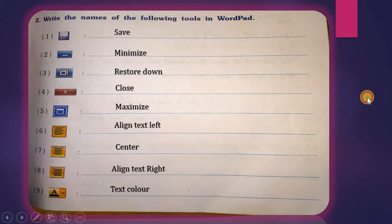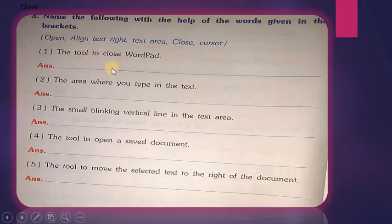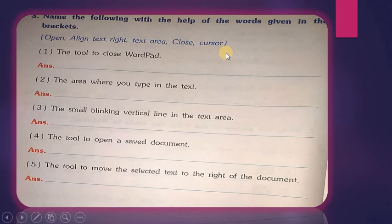Now see the next activity: name the following with the help of words given in the brackets. You have to read the question and choose from the given options. The options are: Open, Align Text Right, Text Area, Close, and Cursor.